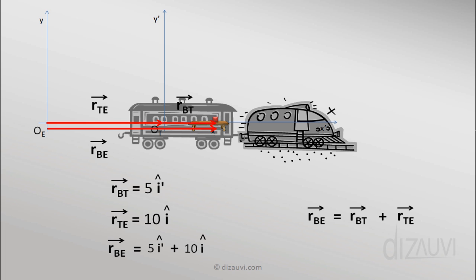To add these two vectors, we must express i' in terms of i. Since i' is a unit vector pointing to the right — towards the front of the train — and i is also a unit vector pointing to the right with the same magnitude 1, by the law of equality of vectors both i cap and i' cap are equal. So we can replace i' with i, and the position vector turns out to be 15i cap.